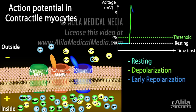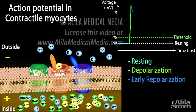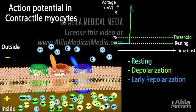The calcium channels, however, remain open, and the potassium efflux is eventually balanced by the calcium influx. This keeps the membrane potential relatively stable for about 200 milliseconds, resulting in the plateau phase, characteristic of cardiac action potentials.